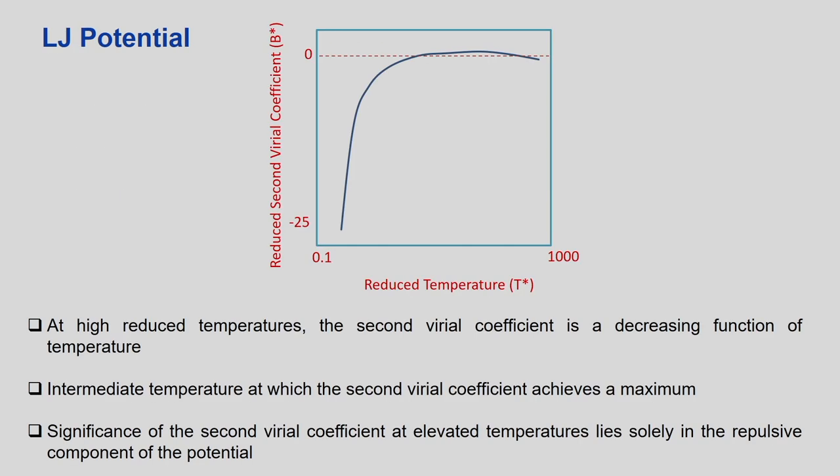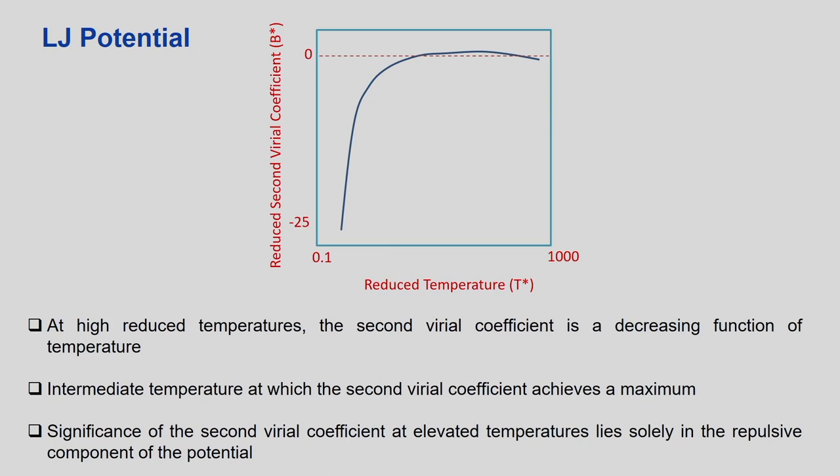We have a plot of a reference molecule where the y-axis is the reduced second virial coefficient — that is the actual virial coefficient divided by the hard sphere potential, giving a dimensionless number. The x-axis is the reduced temperature, which is kT divided by epsilon. This plot can be discussed from both the left-hand side and the right-hand side.